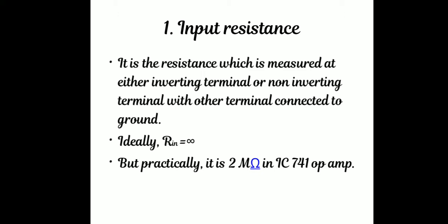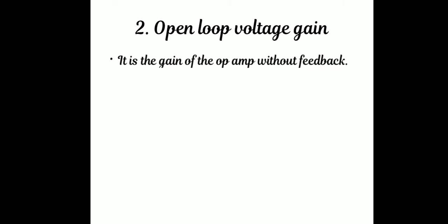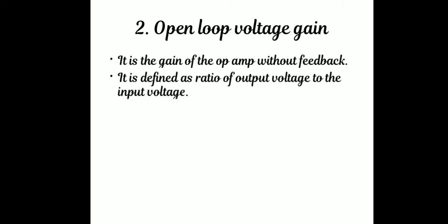Next characteristic: Open Loop Voltage Gain. Voltage gain is output voltage divided by input voltage. This is the gain of the Op-Amp without feedback. Without feedback, we measure the open loop voltage gain. With feedback, we measure the closed loop voltage gain. It is defined as the ratio of output voltage to input voltage, so AVL equals V0 divided by VIN.